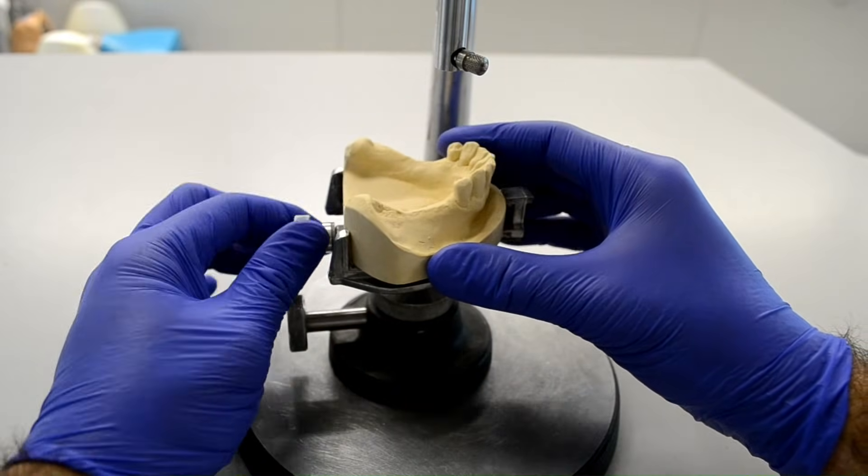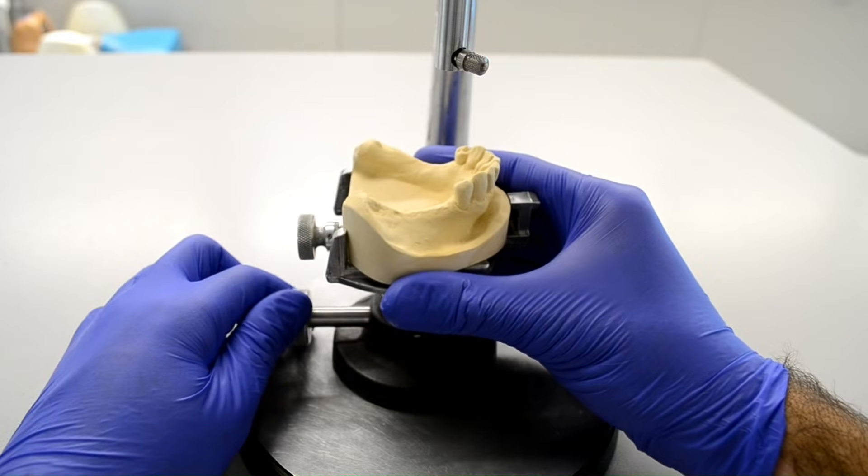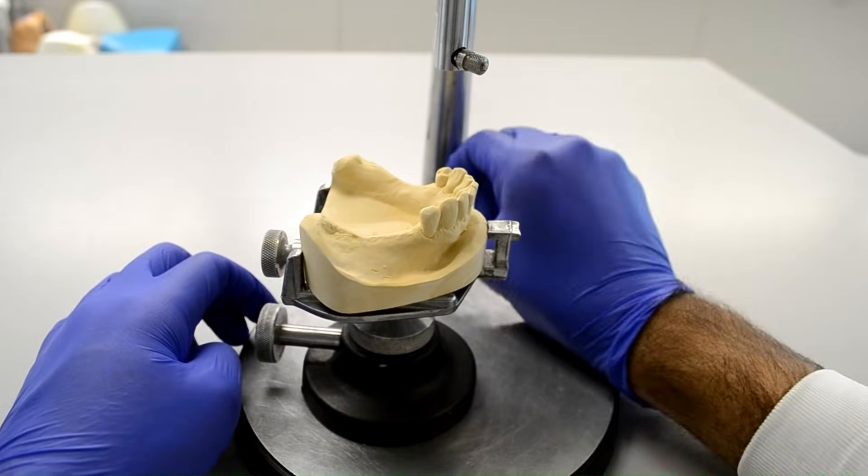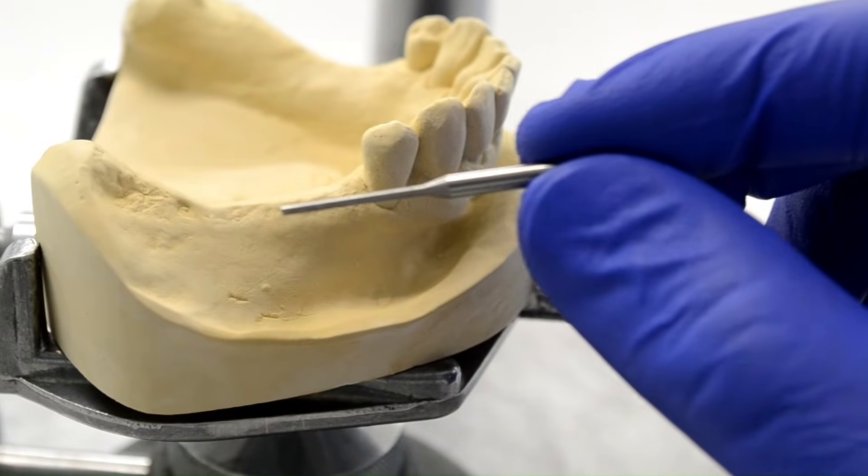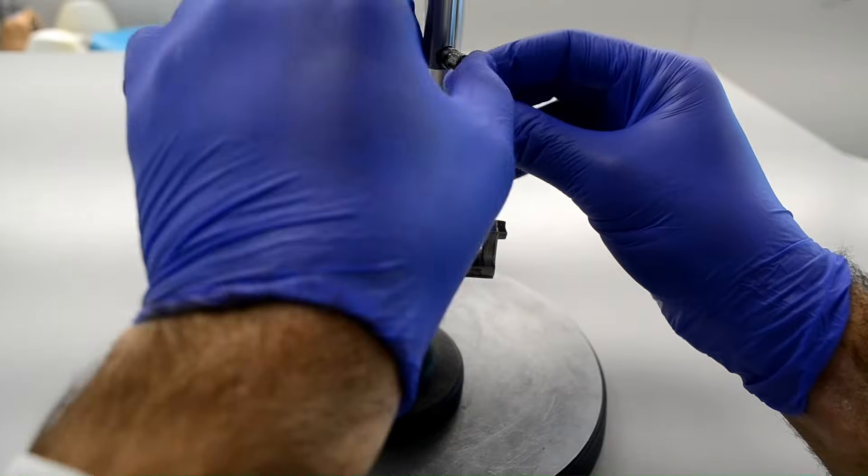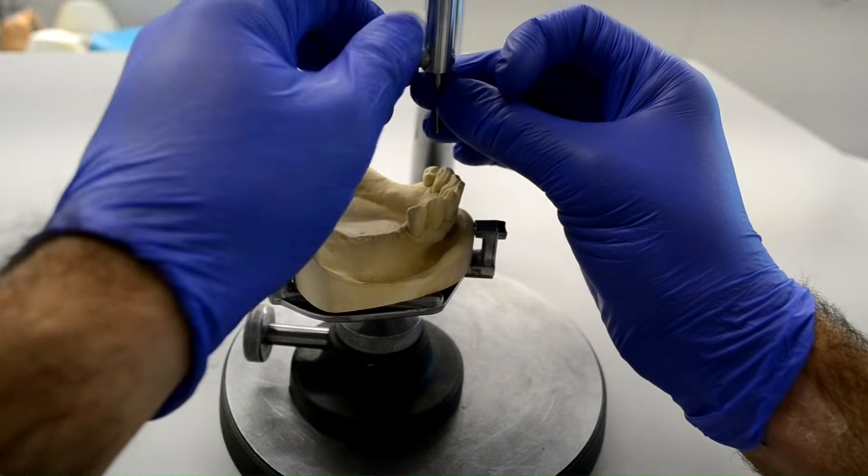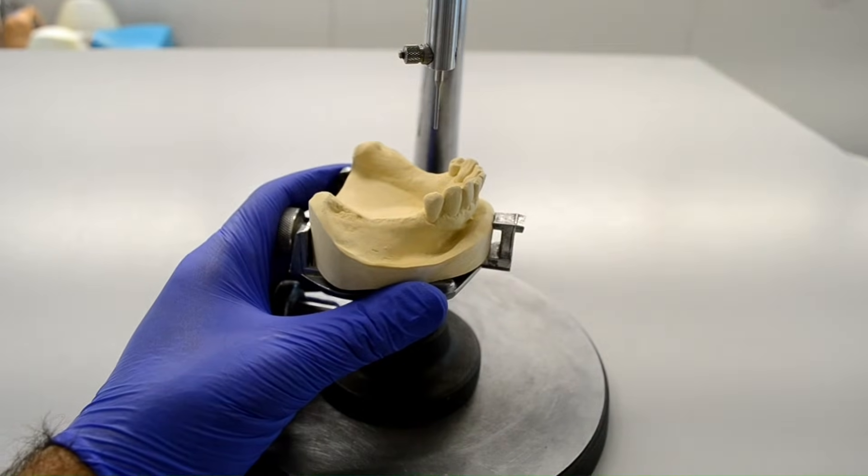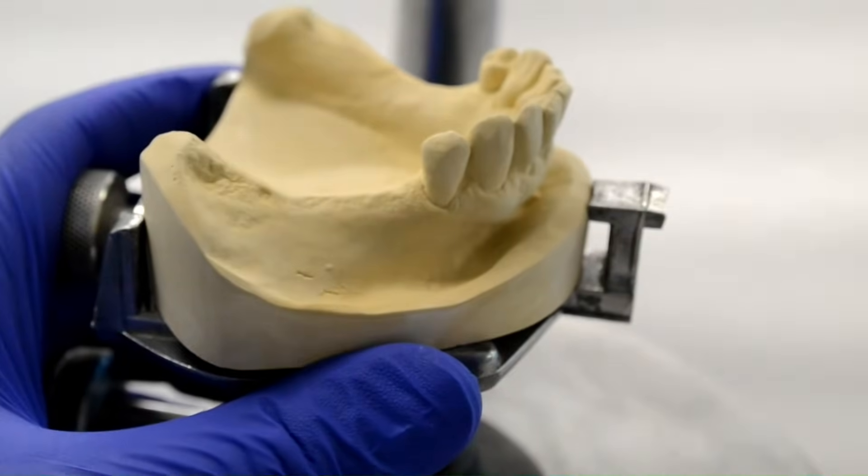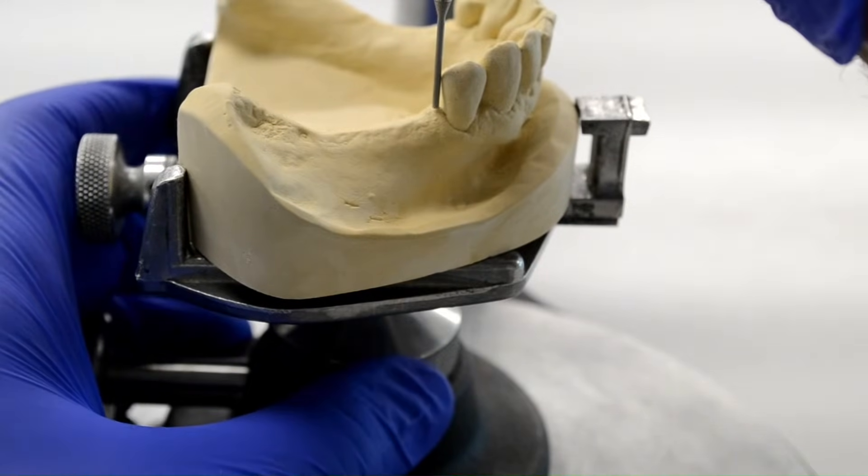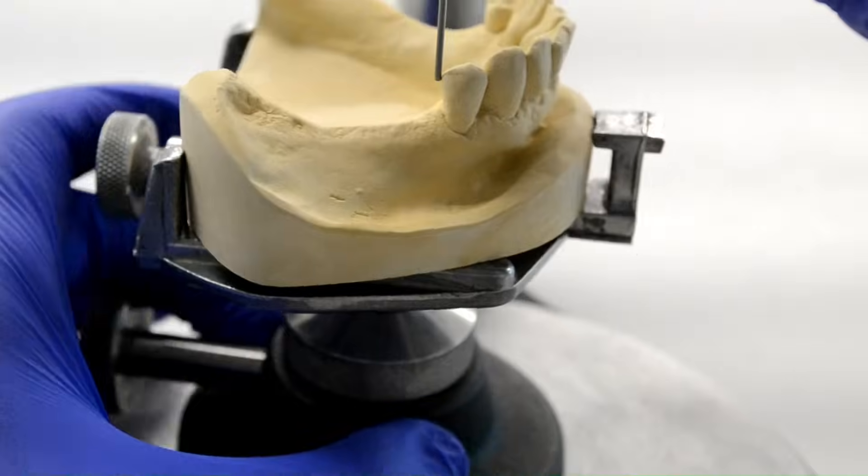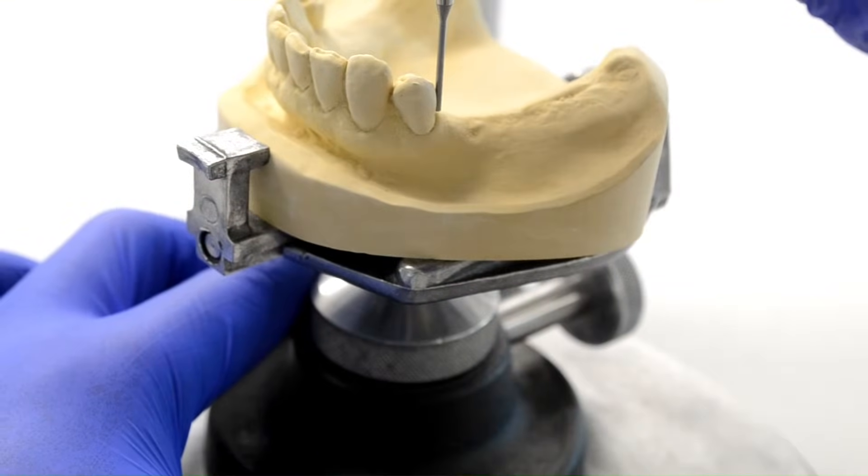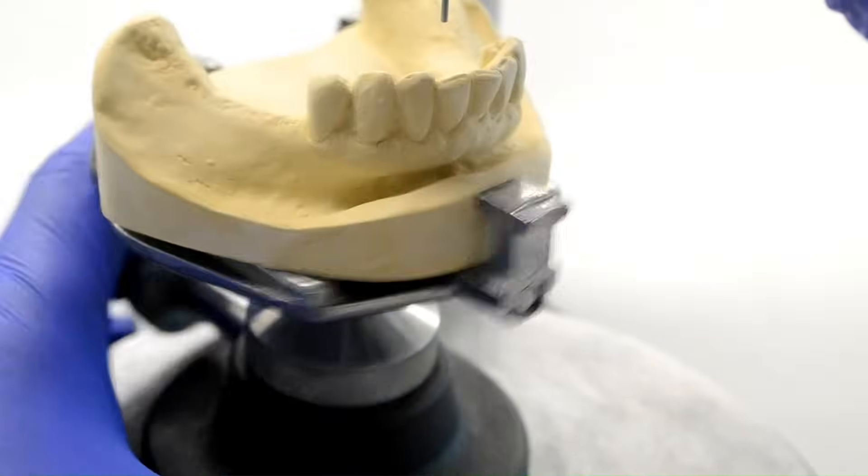We will start by securing the cast onto the table. The first thing to do is to analyze the cast. This is done using the analyzing rod, which looks like this. We'll go ahead and put that into the mandrel. The goal of analyzing the cast is to identify a path of draw that would require the least amount of adjustment on the guide plane areas. The ideal path of draw would require even adjustments on all abutments rather than no adjustments on some abutments at the expense of the others.